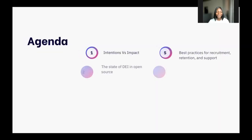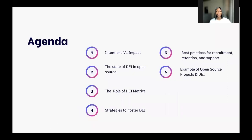During this section, we're going to look at the difference between intentions and impact. We're going to talk about the state of diversity, equity and inclusion in open source, the role of DEI metrics, and the strategies that we can use to foster DEI within our respective communities. Then we're going to look at best practices for recruitment, retention, and support, and examples of some awesome open source communities that are championing initiatives to help foster diversity, equity and inclusion.